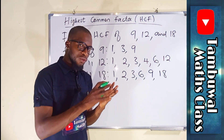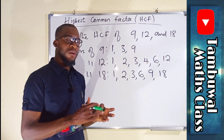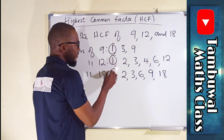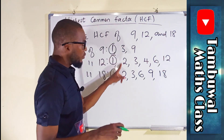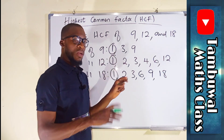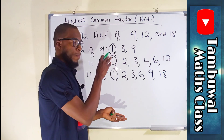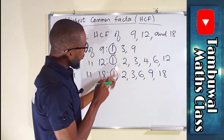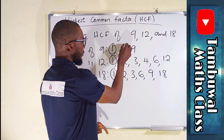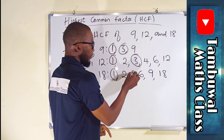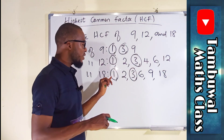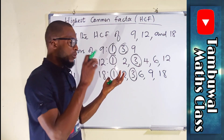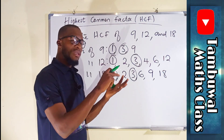We are done with factors. Now we move to common factors — those factors they all have in common. We have one for each of them. Twelve and eighteen have two, but nine does not contain two, so it is not a common factor of all three numbers. However, all of them have three. Apart from one and three, they do not have any other number in common, so we stop here.